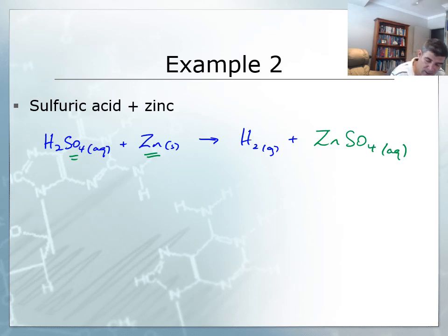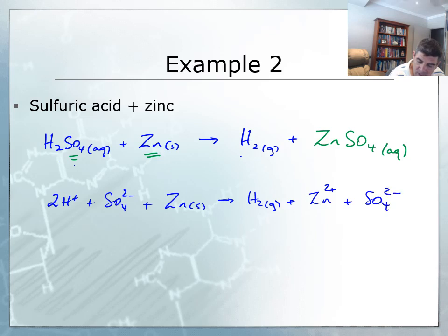So we've got 2H+, you should just double check that it's balanced, and in this case it is, SO4 2- and Zn solid forming H2 gas, Zn2+ and SO4 2-. As we saw before, the anion is the spectator ion in this case.